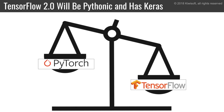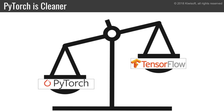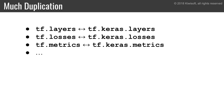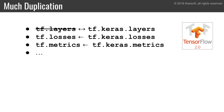So TensorFlow 2.0 will support eager mode and graph mode nicely. It will be much more object-oriented, including high-level APIs such as Keras. But PyTorch fans will also point out that PyTorch's API is nice and clean, while TensorFlow's API is cluttered and full of duplicates and deprecated APIs — and that's true. For example, you can create layers with tf.layers or tf.keras.layers, and so on.